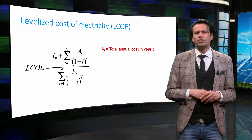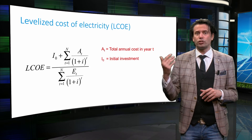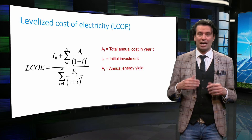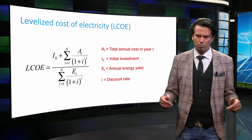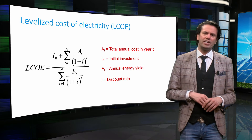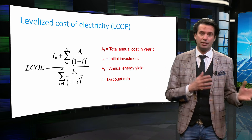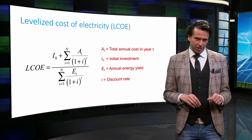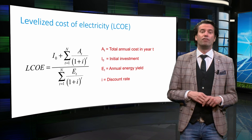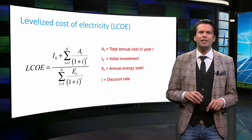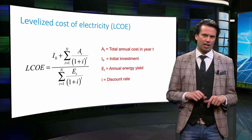Here, AT is the total annual cost in year T, I0 is the initial investment, and ET is the annual energy yield. I is the discount rate to account for the time value of money. The discount rate relates the worth of a certain amount of money in the future to the amount it is worth in the present. Based on the location of the PV system and the cost of the materials, the levelized cost of a PV project can vary strongly. Also, the discount rate used for the evaluation will have a big impact on the levelized cost value.